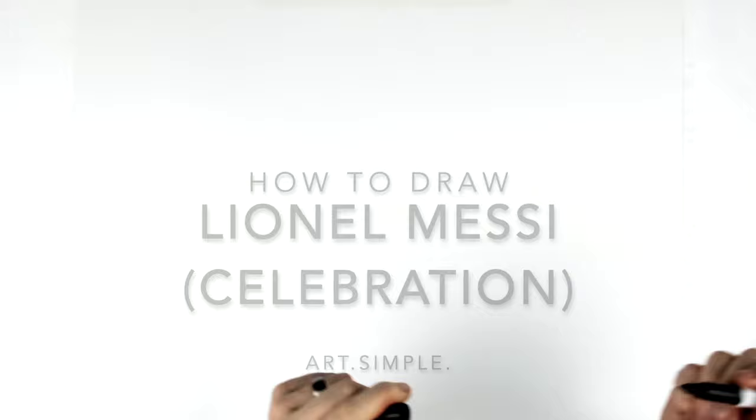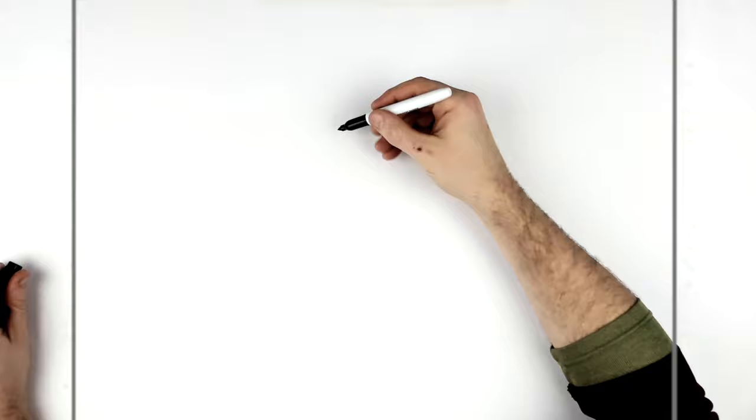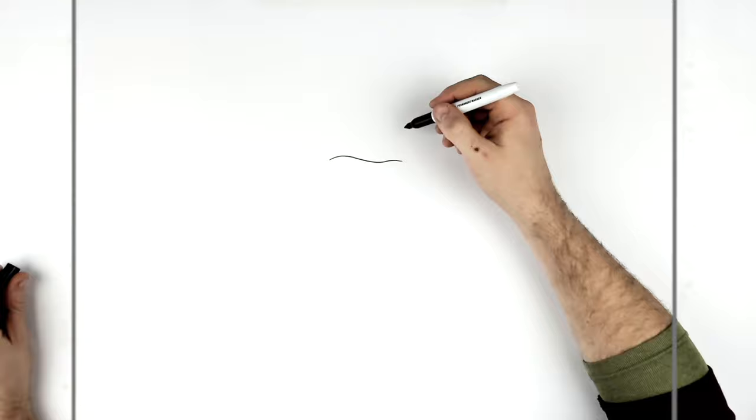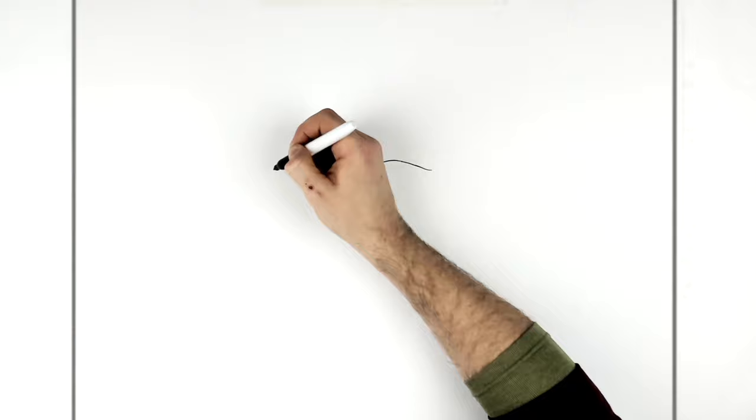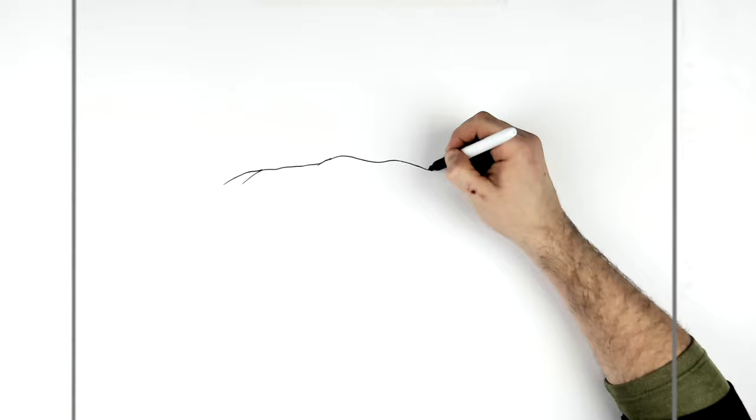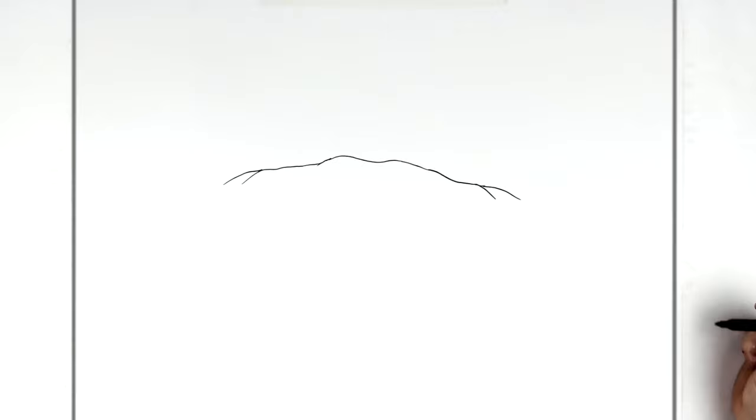I'm gonna start with the top of his collar, right, of his shirt. So we'll just go across this way, kind of bumps down around. And we'll go down this way. So this is like the back of his shoulders and stuff here. And so this curves across his back like so.